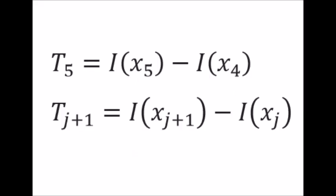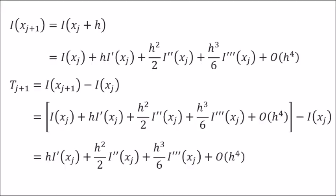This can be generalized to any panel, t sub j plus 1, as seen here. The first two lines on this page show a Taylor series expansion for i of x plus h. Then we plug that into our expression for t sub j plus 1. Notice that i of x sub j cancels out. In the last line, we have an expression entirely dependent on derivatives of i.